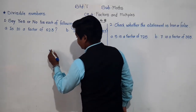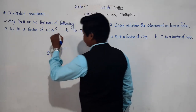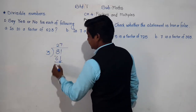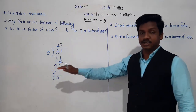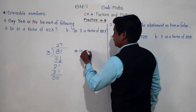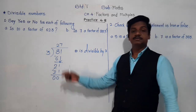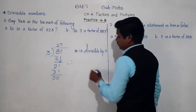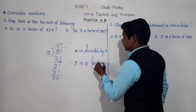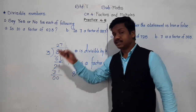Let's take another example so your concept will be clear. For example, we will take 81. Suppose we divide 81 by 3. 3 twos are 6, 8 minus 6 is 2, and 3 sevens are 21. When we divide 81 by 3, we got remainder 0. That means 81 is divisible by 3. Since 81 is divisible by 3, 3 is a factor of 81.